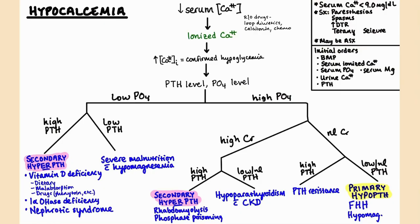Another useful approach: get the ionized calcium, phosphate level, and PTH level. Looking at your creatinine can be helpful too — if you've got a patient with a high phosphate level and a high creatinine level, think of this as a problem in the kidneys. Also consider phosphate poisoning and tumor lysis syndrome, which is essentially phosphate poisoning.